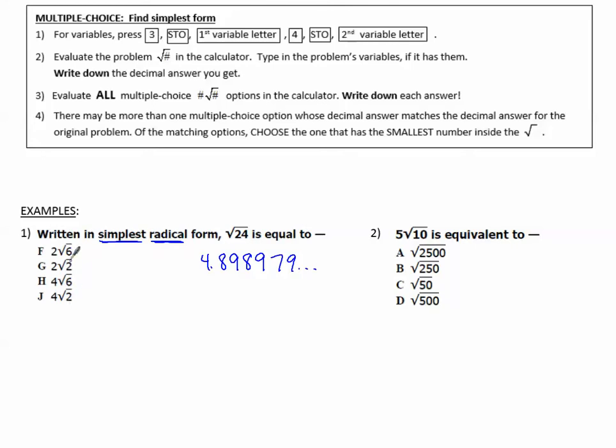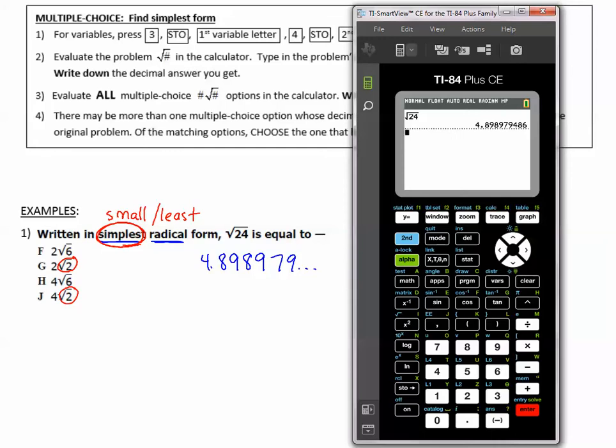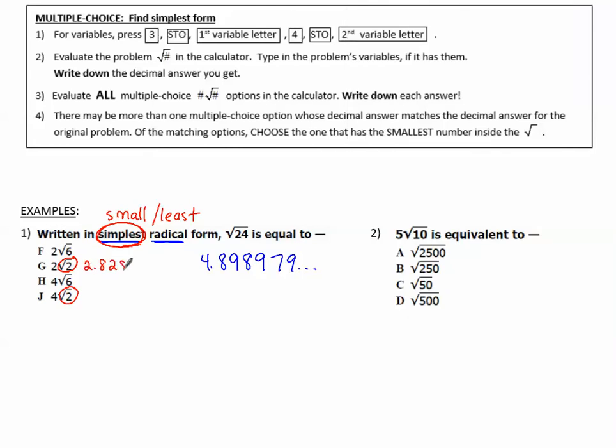And then I'm going to see which one matches when I type these into the calculator. However, when it says simplest form, I want to think of how simple means small. So I want to type the smallest or the least that's in the radical first, like the square root of 2. So I'm going to type 2 and then the square root of 2: 2, second x squared, 2. That is a different value, 2.828. Because it does not match, g is not the correct answer.